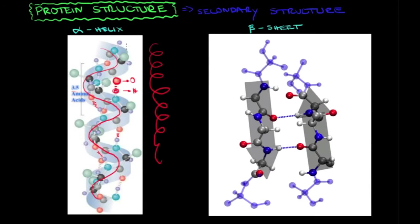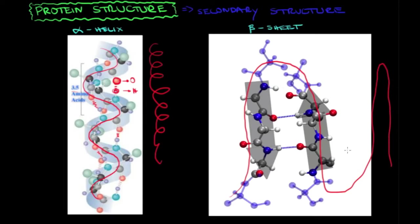For the beta sheet, it has the same shape I described — going up and going down, with another pleat, and another. There are hydrogen bonds between these bands or pleats. The oxygen of one amino acid and the hydrogen of another form a hydrogen bond — and this is how this structure is stabilized. I wanted you to have a clearer view of how this looks at a molecular level.